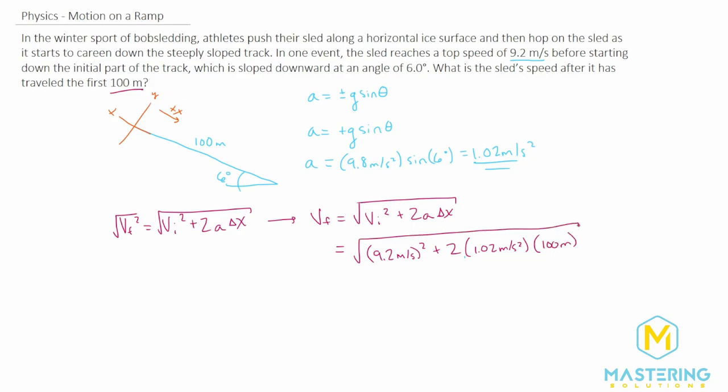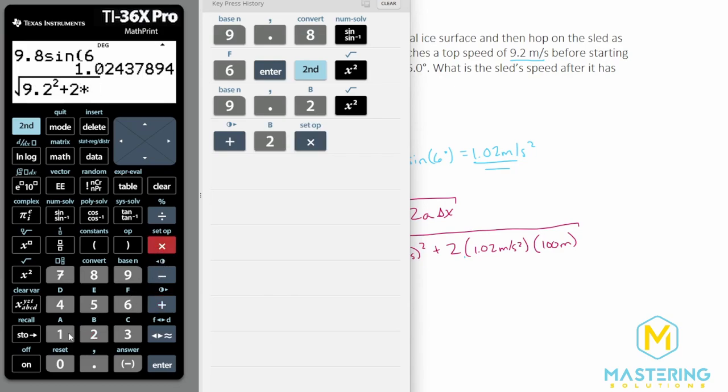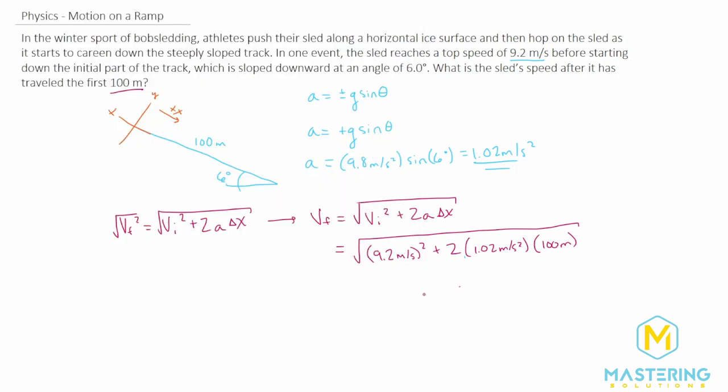Taking the square root of all of that, we have the square root of 9.2 squared plus 2 times 1.02 times 100, which gives us a final speed of the bobsled after 100 meters of 17 meters per second.